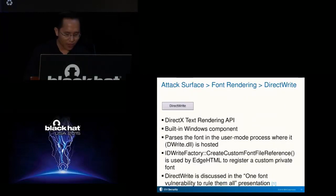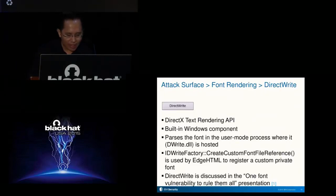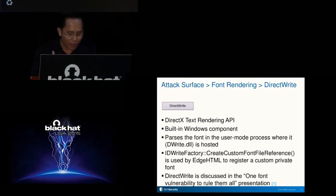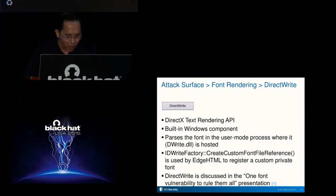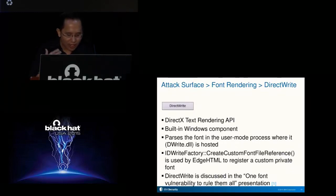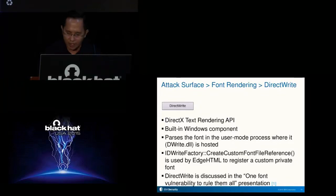DirectWrite is used for font rendering in EdgeHTML and is part of the DirectX family of APIs. Unlike GDI, DirectWrite parses the font in the user mode process where it is hosted, so the font parsing code is sandboxed in the same Edge content process that hosts the rendering engine. DirectWrite is discussed in the excellent 'One Font Vulnerability' presentation. DirectWrite is another security-critical library because its font parsing code is remotely reachable via the rendering engine.